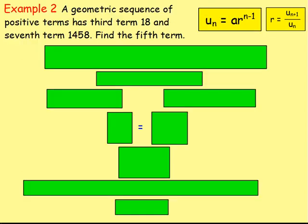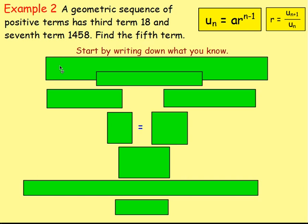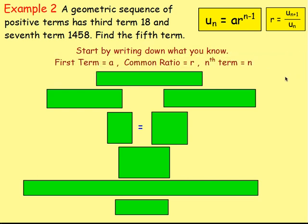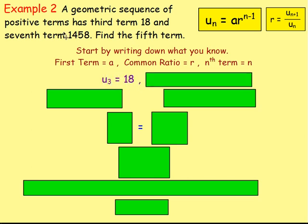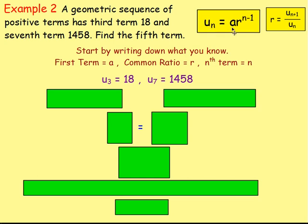Example 2. A geometric sequence of positive terms has a third term of 18 and a seventh term of 1458. Find the fifth term. Just start writing down what you know. We're told that the third term is 18, so u3 equals 18. We're also told that the seventh term is 1458, so u7 equals 1458. In order to work out the fifth term u5, we need to work out a and r, and we know n would just be 5.